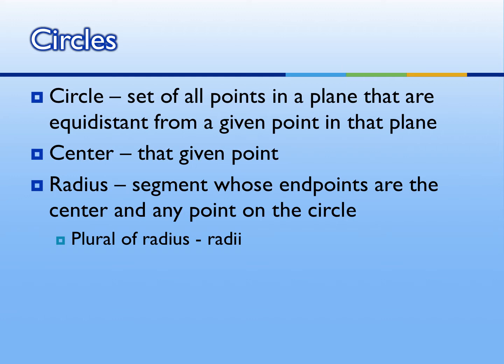When we name a circle, we will be using the center point. Another segment that is part of a circle is called the radius. A radius is a segment whose endpoints are the center and any point on the circle. The plural of the word radius is called radii.